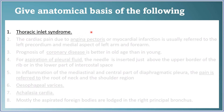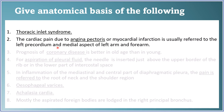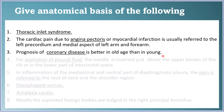Now, anatomical basis questions. Thoracic inlet syndrome: a tumor or aneurysm of the arteries can press upon the thin-walled veins and nerves — describe the resulting signs and symptoms. Note that clinicians often say thoracic outlet instead of inlet. Cardiac pain due to angina pectoris or myocardial infarction is usually referred to the left precordium and medial aspect of the left arm and forearm because the same spinal segments supply these areas — mention those spinal segments.